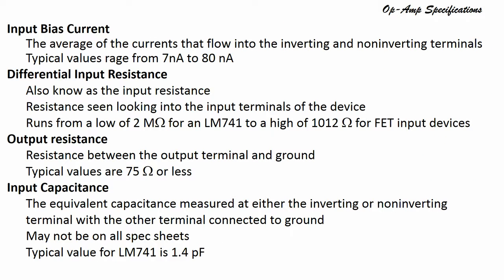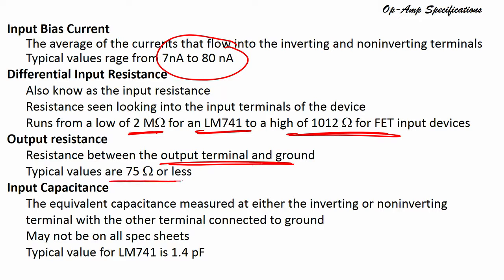Input bias current is the average of the currents that flow into the inverting and non-inverting terminals, with a typical value of around 7 to 18 nanoamperes. Differential input resistance is the resistance seen at the input terminals, ranging from 2 megaohms for the LM741 up to 10¹² ohms for FET-input devices. Output resistance is the resistance between the output terminal and ground, with a typical value of 75 ohms or less. Input capacitance is the equivalent capacitance measured between inverting or non-inverting terminal and ground — it may not appear on all specification sheets.